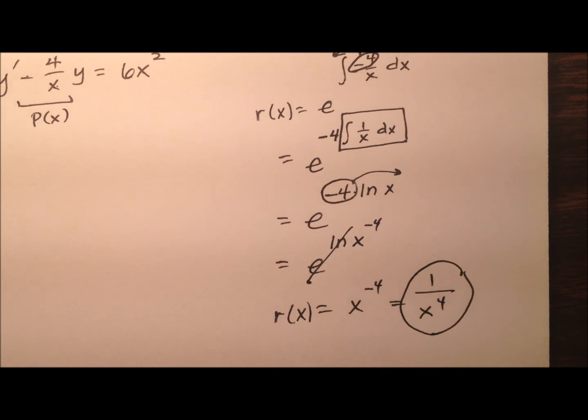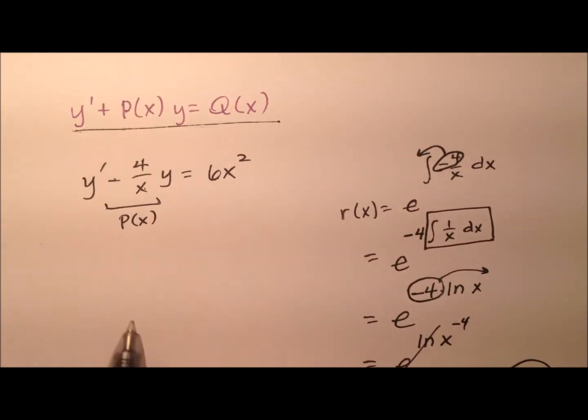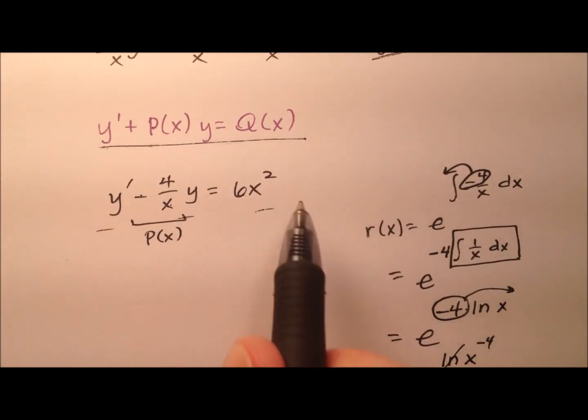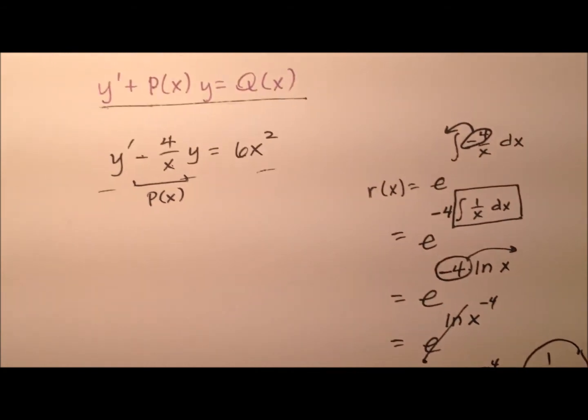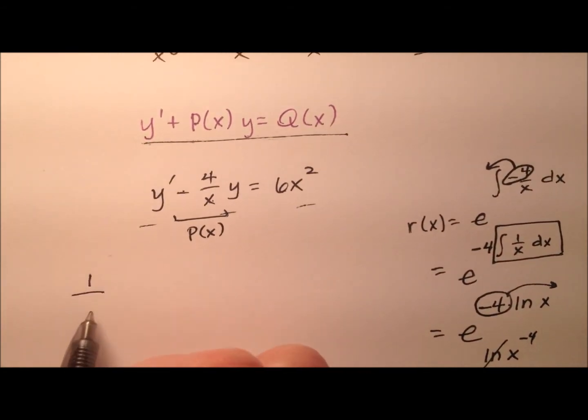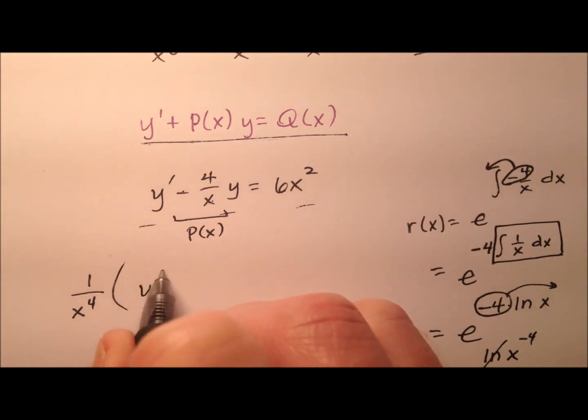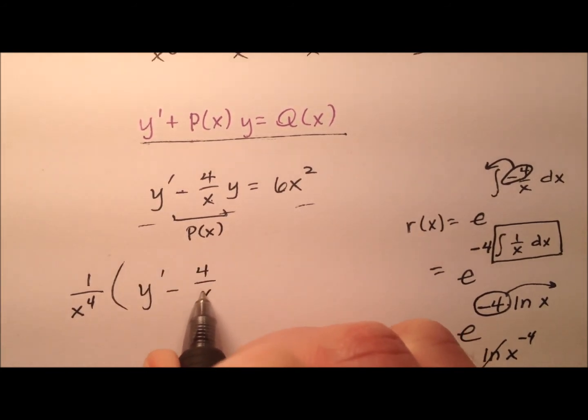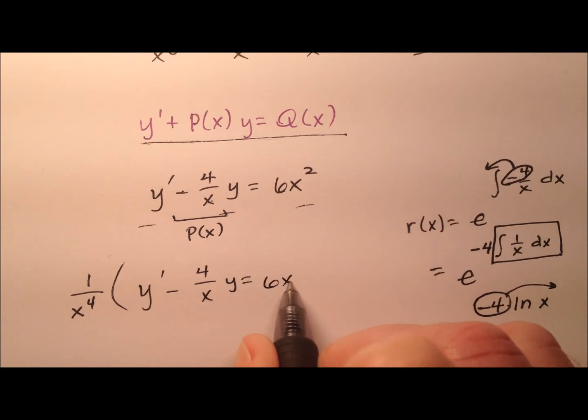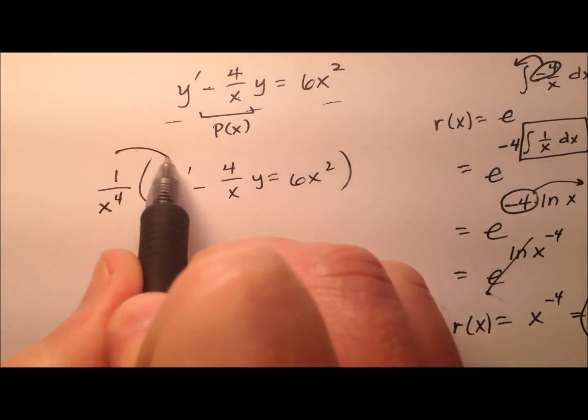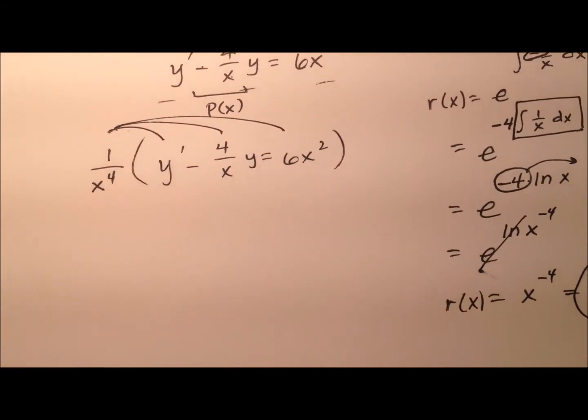Well, what am I going to do with that integrating factor? Well, I'm going to go ahead and multiply it by every single term in my differential equation. So 1 over x to the 4th, and I'm going to multiply that through by y prime minus 4 over xy equals 6x squared.